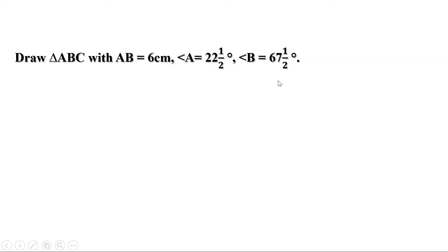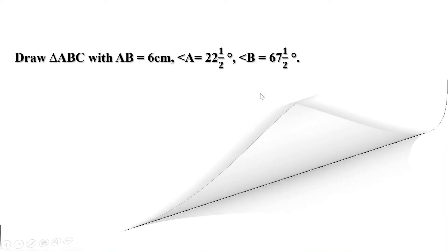In the same way, instead of taking 67 and a half degrees, we can double it and draw an angle of 135 degrees, and when we draw the bisector, we get two equal angles of 67 and a half degrees. Let us see how to do it.